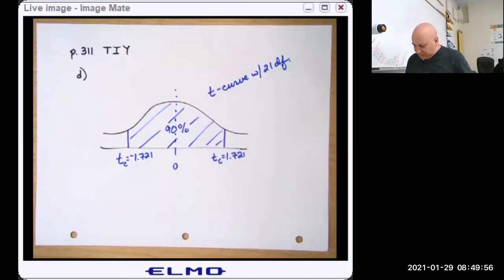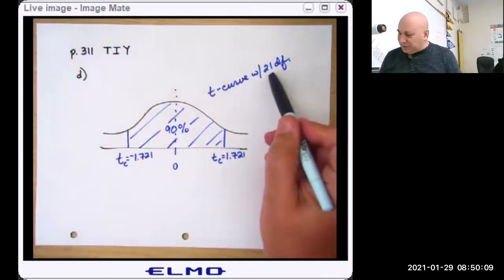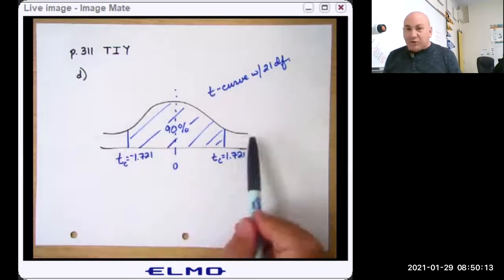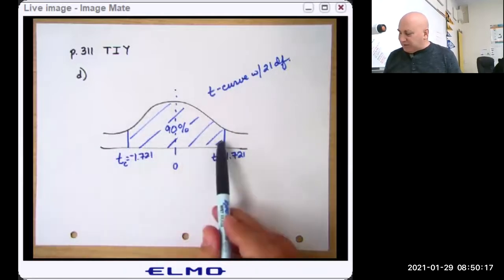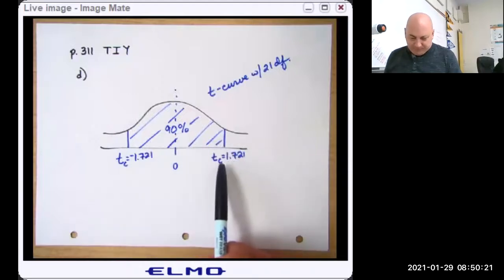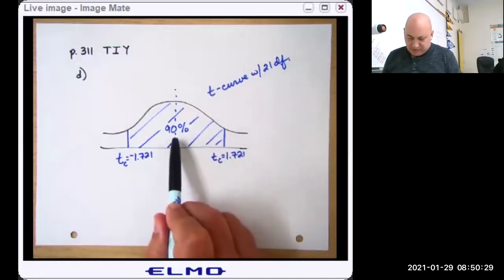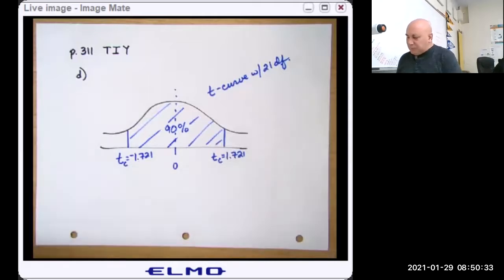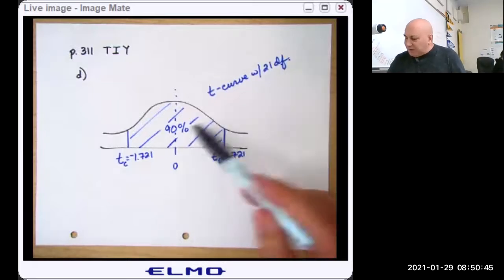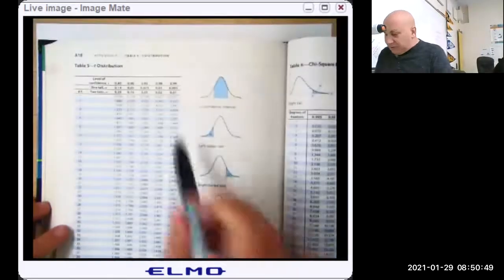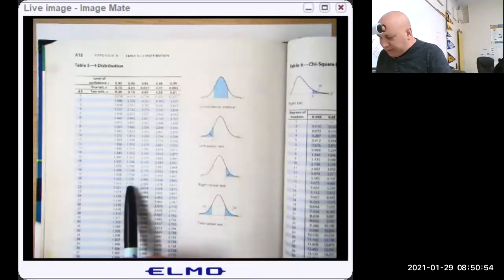The try it yourself problem says, find the t-critical value for a 90% confidence interval when the sample size is 22. So sample size of 22 means we have 21 degrees of freedom. So I draw a shorter, fatter normal curve, that's my t-curve, and I want the middle 90%. And what are my t-critical values? So it says identify the degrees of freedom, I've done that. Identify the confidence level. Well, they told us it was 90%. Find the t-critical values. So if we go to page A18, I go to the row for 21 degrees of freedom, 90% confidence interval. So here's 90% confidence interval, 21 degrees of freedom, 1.721.